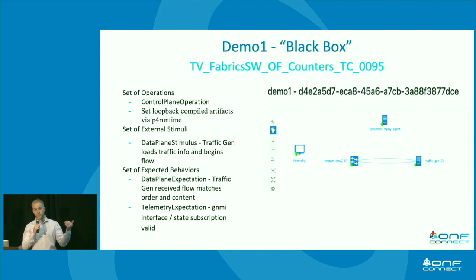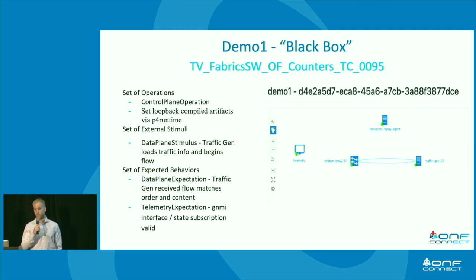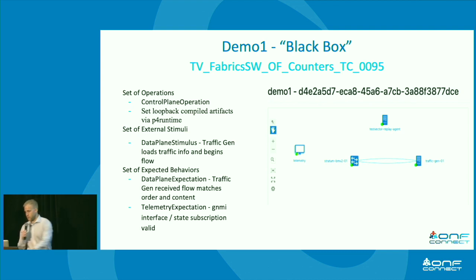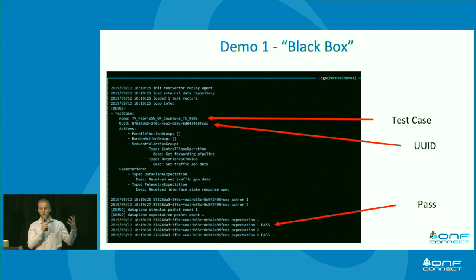The part focused on in this talk is the external stimuli aspect: the packet that goes in and the expected packet on the return side. In addition, we are subscribing to the gNMI interface to check things like interface counters. In this case, we took the TV fabric switch from the old OpenFlow tests — same idea, but now with the newer interface.